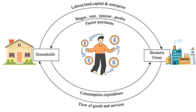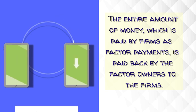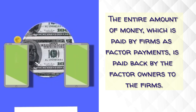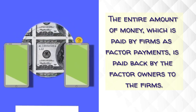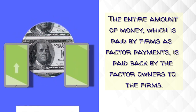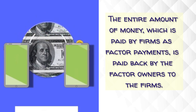The lower loop shows the flow of goods and services from firms to households and the corresponding flow of consumption expenditure from households to firms. The entire amount of money paid by firms as factor payments is paid back by the factor owners to the firms. This flow of goods and services and factor payments between firms and households reflects the circular flow of money in an economy.